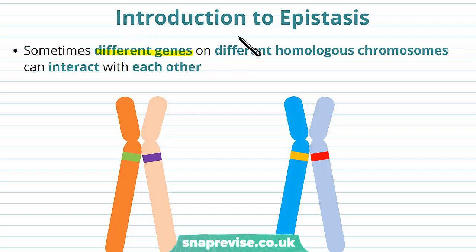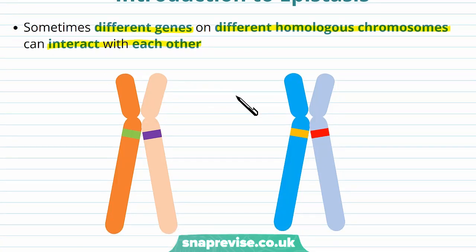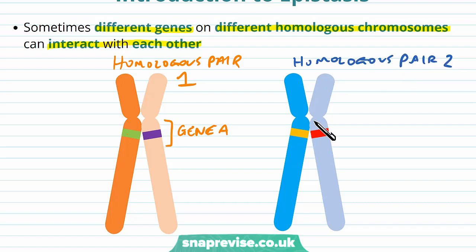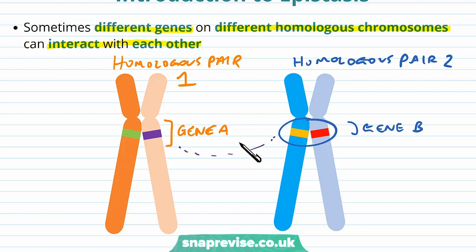Sometimes different genes which are on different homologous chromosomes across the genome can interact with each other and affect how one is expressed compared to the other. For example, we can have homologous pair number one with two genes, and a second homologous pair separate from this with different genes, such as gene B, and even though they're on different sites across the genome they can interact in various different ways.